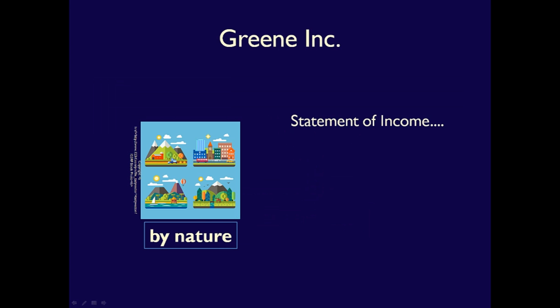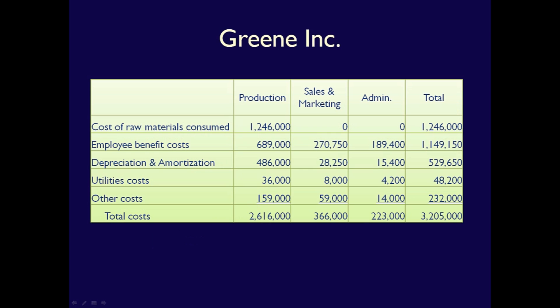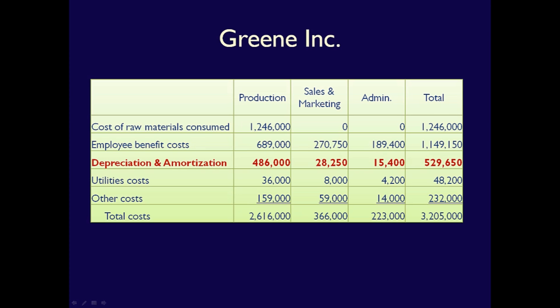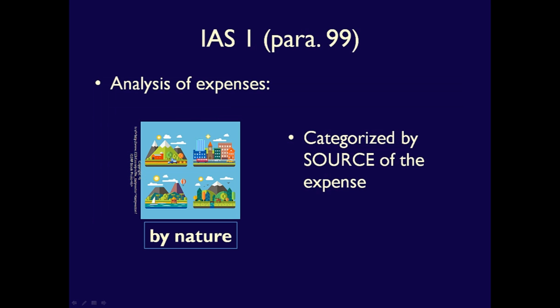What about presenting expenses by nature? Let's go back to our example. If Green Inc. reports their expenses by nature, they would group expenses that have a similar source together. For example, employee benefit costs may be divided by department, but all of these expenses are from the same source — employees working for the company. Depreciation and amortization can also be divided by department, but all of these expenses are from the same source: using long-lived assets in the operation of the business. Expenses by nature means that all expenses with a similar source are grouped together on the Statement of Income, Comprehensive Income.